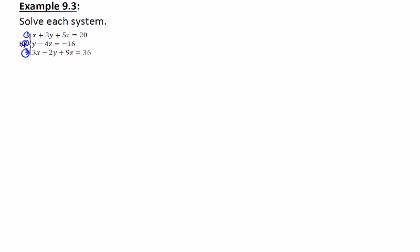The second equation only has two variables in it. So when I start off my elimination, I'm not going to worry about pairing up the first and the second equation like I did on example 9.3a. Instead, I'm just going to go straight to pairing up the first and the third equation.